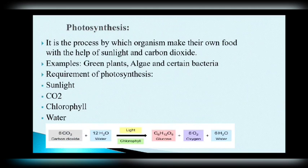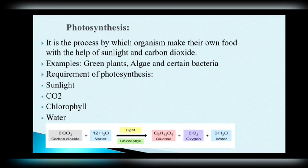Chlorophyll is a green pigment present in the plant. In the equation of photosynthesis, on the left-hand side of the arrow you can see carbon dioxide and water, and on the arrow you can see light and chlorophyll — showing that the process takes place in the presence of light and chlorophyll. As a product, it forms glucose, which you can consider as food for plants. As a by-product, it also releases oxygen into the atmosphere, along with water (H₂O).